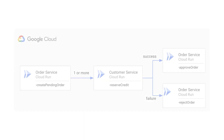I've heard and read about the saga pattern before, and it has something to do with compensation steps, right? Yes. The idea is when a service call fails, you need to decide if you need to take a compensation step to undo a previous call. In this case, order service creates the pending order. If the customer service cannot reserve credit, the pending order needs to be canceled — that's the compensation step.